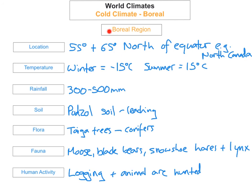So we've looked at the boreal region, which is a cold climate. I've looked at the main headings: the location, the temperature, the rainfall, the soil, the flora, the fauna, and the human activity. This is a good case study to know. There are quite a lot of adaptations, particularly between the flora and the fauna — how animals and the trees have adapted to survive in this region. In the tundra region, there's not as many adaptations, because not as many plants and animals live there.